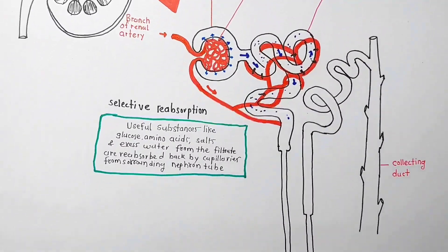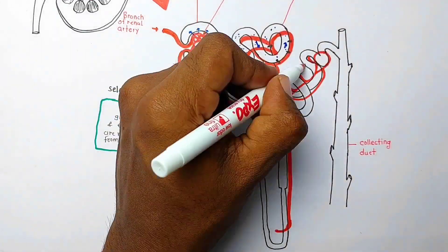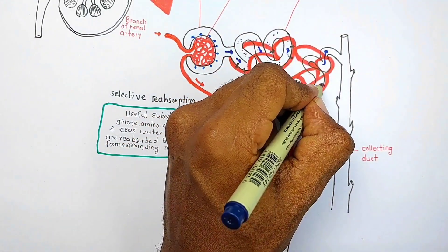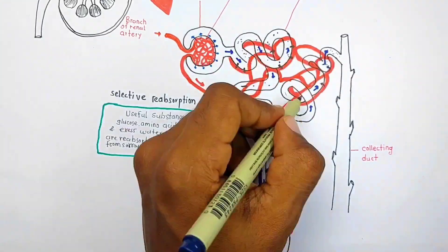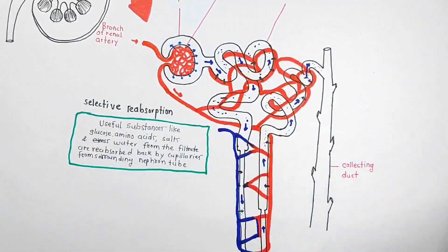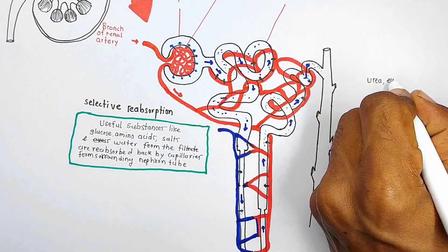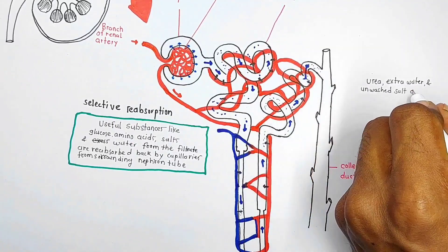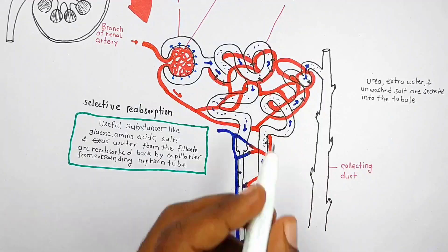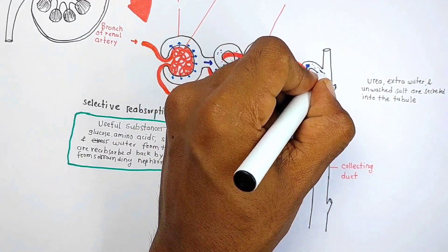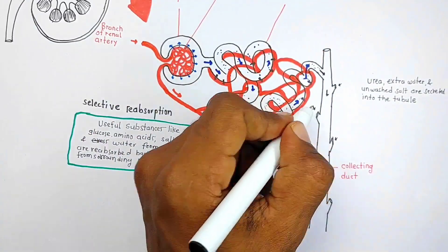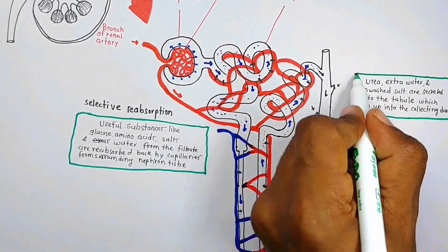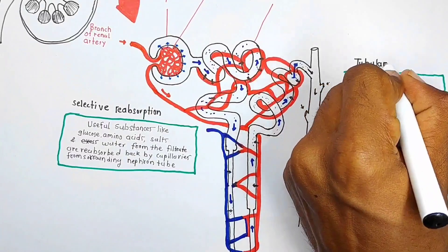Now let's see what happens at the end of the nephron tube. Some waste products present in the blood capillaries are finally excreted into the end of the nephron tube. Urea, extra water, and unwanted salts are secreted into the nephron tubule, and this urine then enters the collecting duct. This is the third step of urine formation, called tubular secretion.